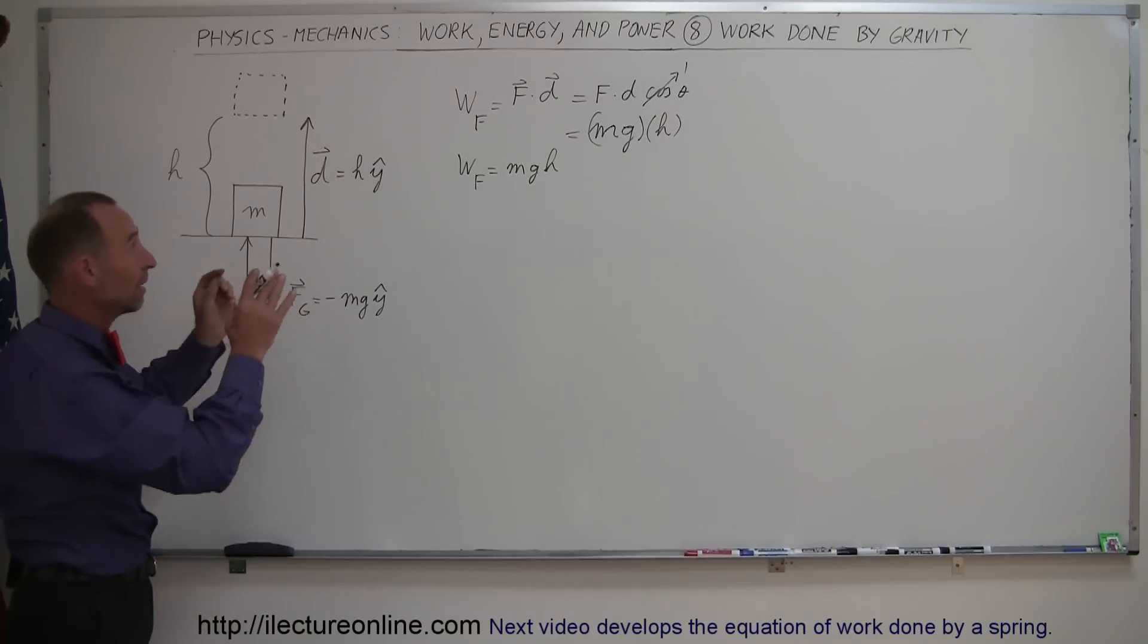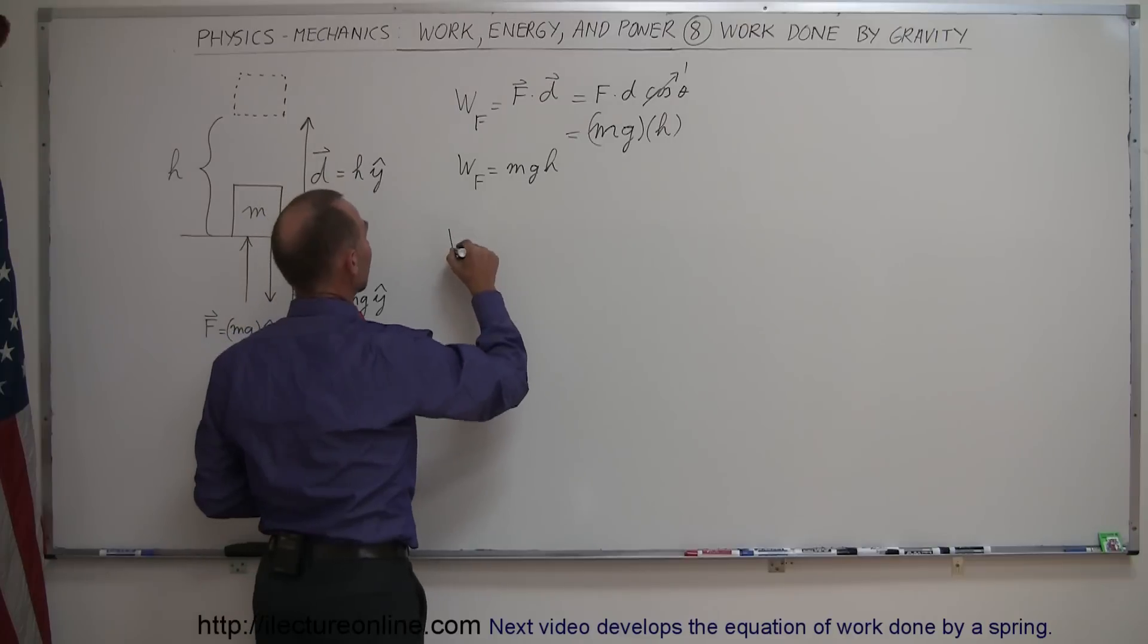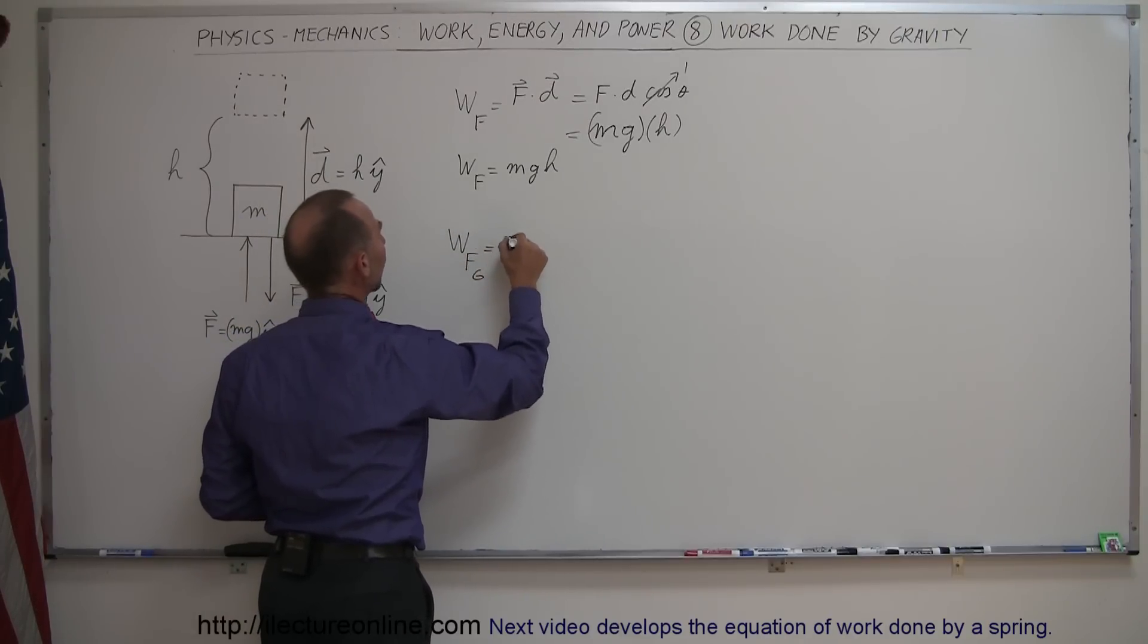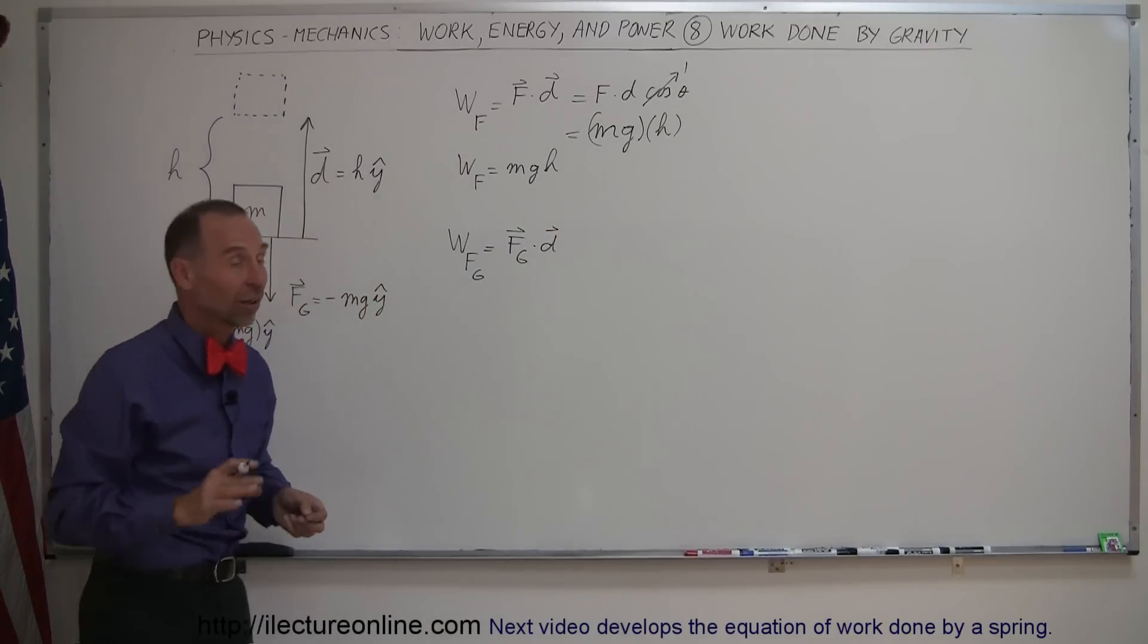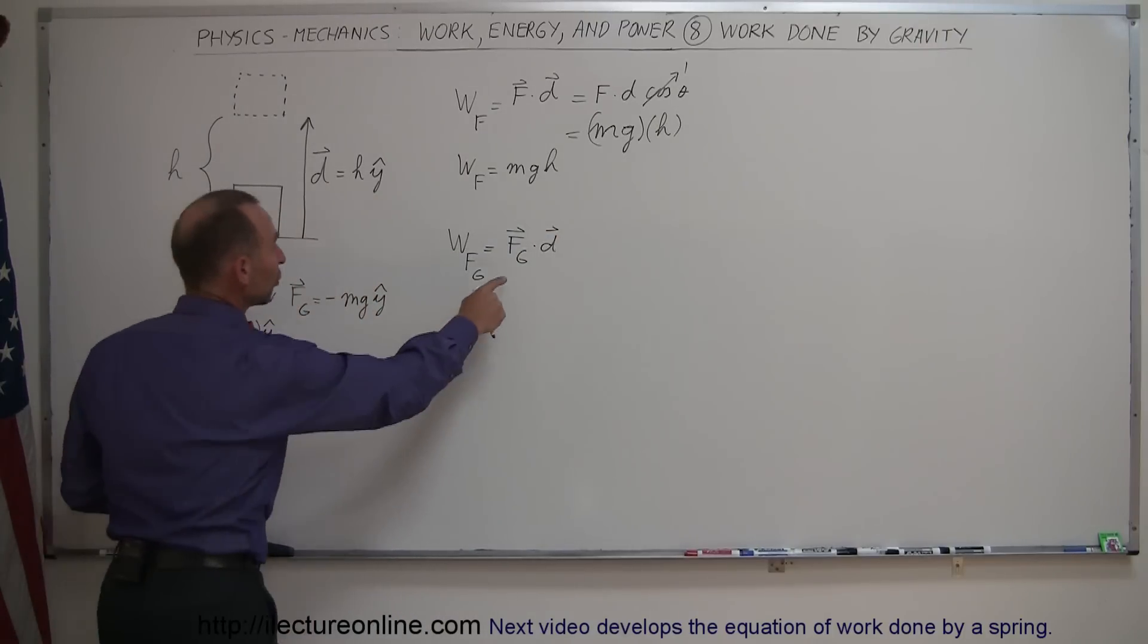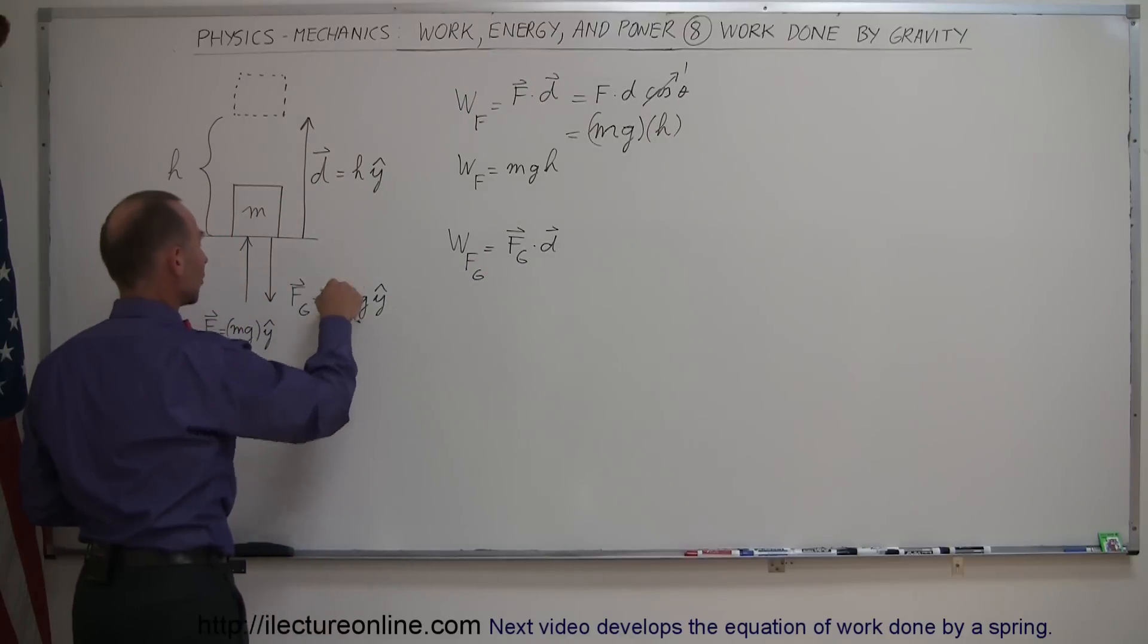Let's just use the same basic equation. So now we're going to calculate the work done by the force of gravity, which is equal to the force of gravity dot the displacement. So we use the very same definition, and let's see what happens. The force due to gravity is actually this one right here.